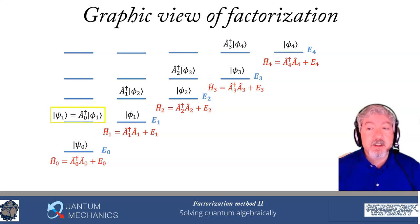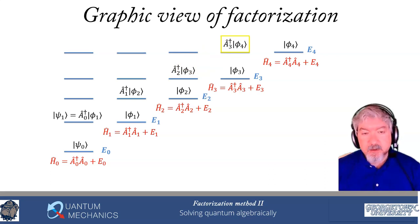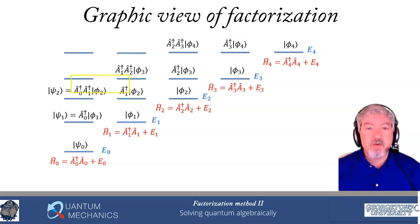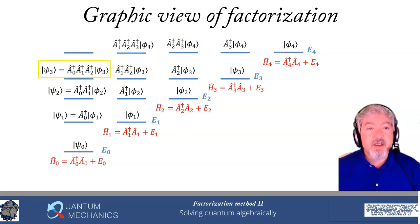Then we get the first excited states of each of those — the true Hamiltonian and each of the auxiliary Hamiltonians — by applying the appropriate operator onto the auxiliary Hamiltonian ground state. For the first excited state it's A0†. The next ones are A1†, A2†, and A3†. You can clearly see that pattern. Then to get the second excited state, we bring in the operator with an index one value less than the one we just put in, and then the third and fourth excited states similarly.